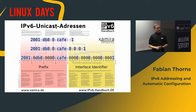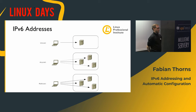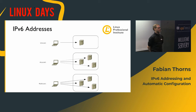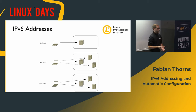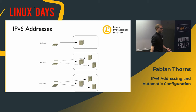IPv6 addresses occur in three different kinds. The most common is a unicast address, which stands for a single device. We also have anycast addresses, which stand for one single device out of a group - commonly used for name servers, where packets are routed to the closest server but all use the same address. And we have multicast, where one packet is sent to a bigger group of nodes. IPv6 doesn't have broadcast anymore, but there's a multicast address for all devices on the link which effectively serves the same purpose.